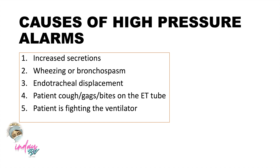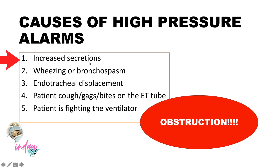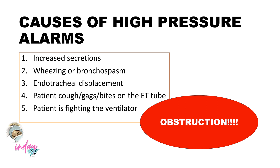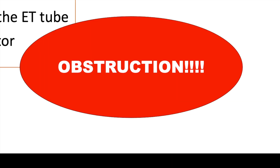High pressure alarms are triggered by obstruction. Increased secretions in the ET tube cause obstruction because air cannot flow. Wheezing or bronchospasm causes the airway to constrict, creating obstruction. Endotracheal displacement — such as moving the patient or a kinked tube — causes obstruction. If the patient coughs, gags, or bites, there is kinking of the tube causing obstruction. If the patient is fighting the ventilator, they constrict their airway, also causing obstruction.